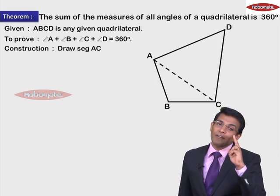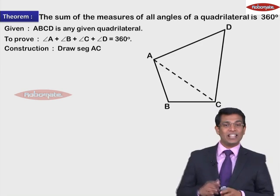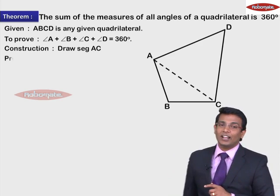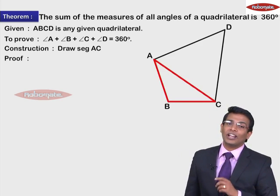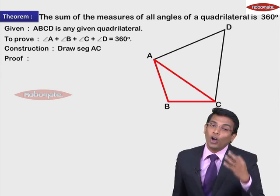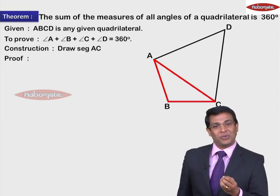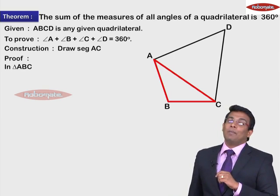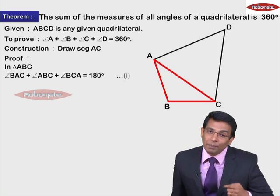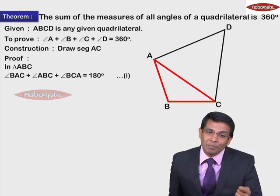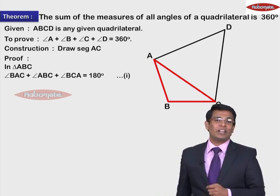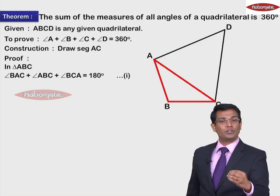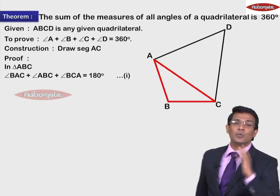Now because of this diagonal, have you got two triangles? Yes. One triangle is ABC, the other triangle is ADC. Let's consider triangle ABC. In a triangle, all three angles sum to 180 degrees. So we write that in triangle ABC: measure of angle ABC plus measure of angle BAC plus measure of angle ACB is equal to 180 degrees. The reason is the angle sum property of a triangle. This is statement number one.